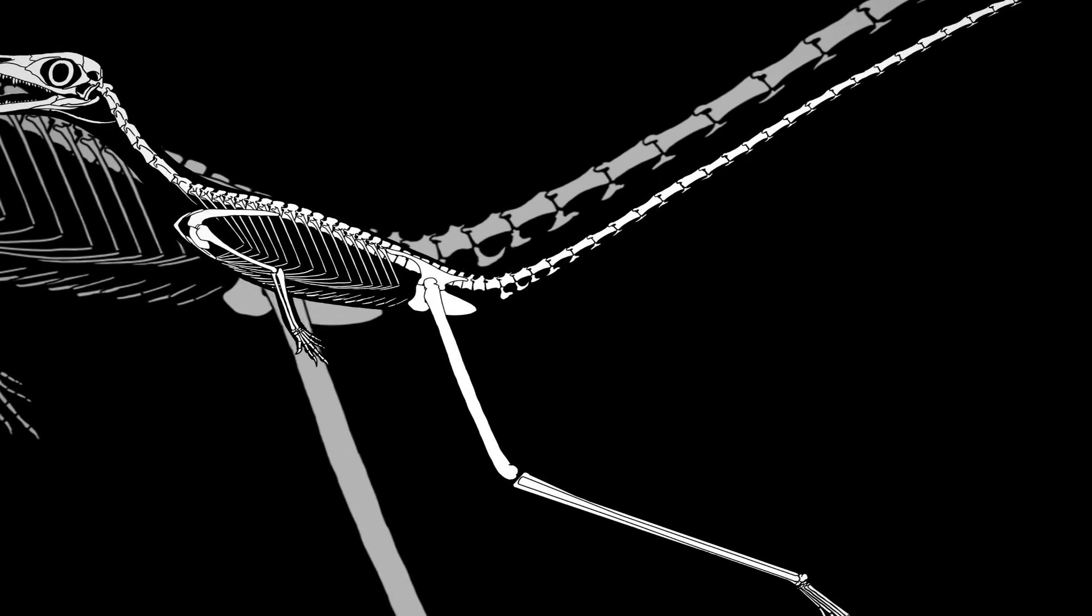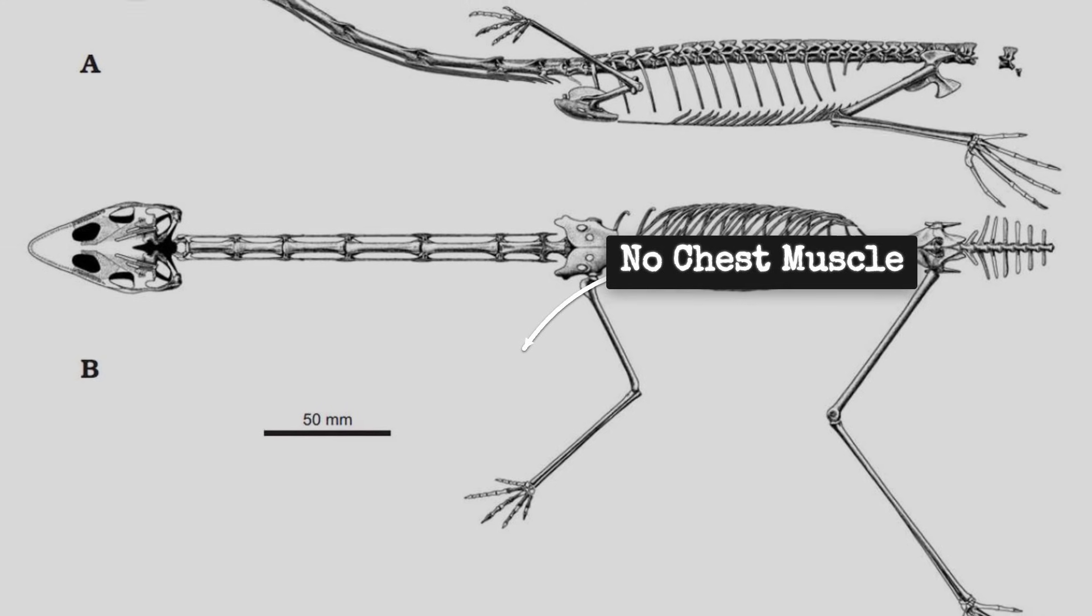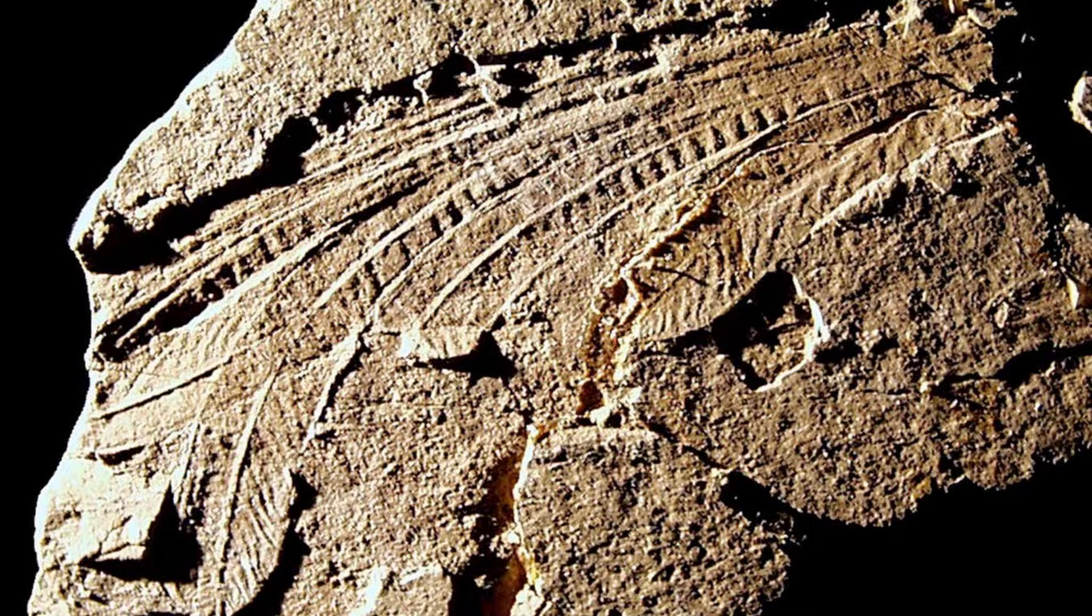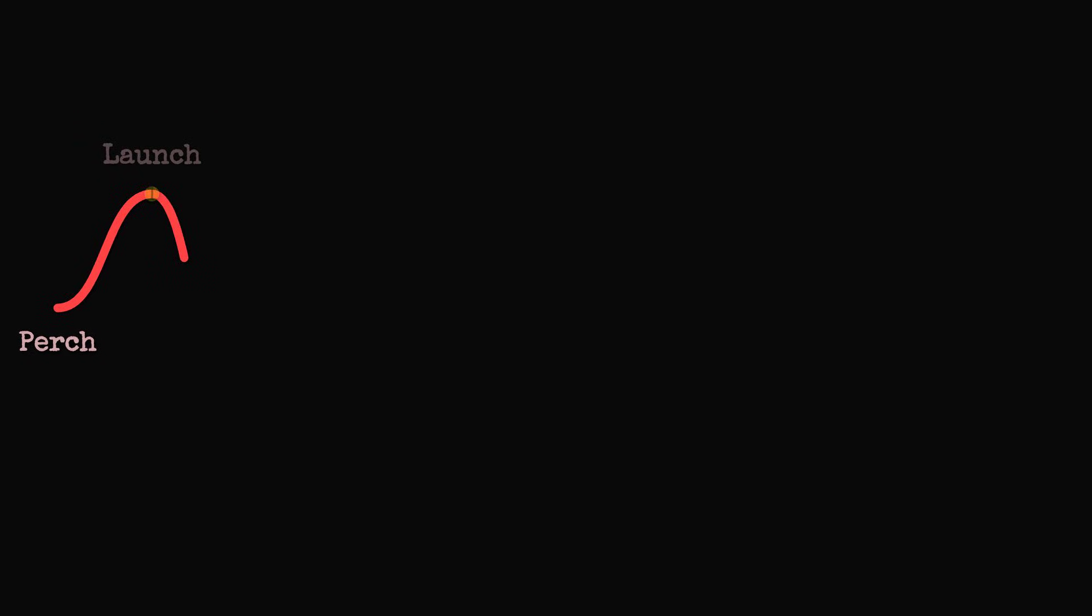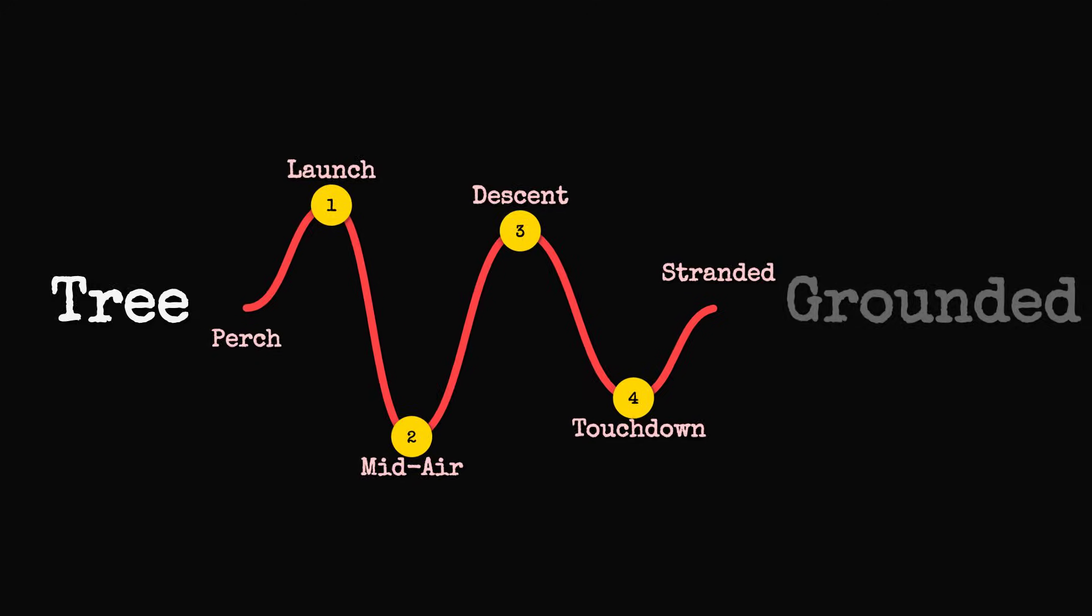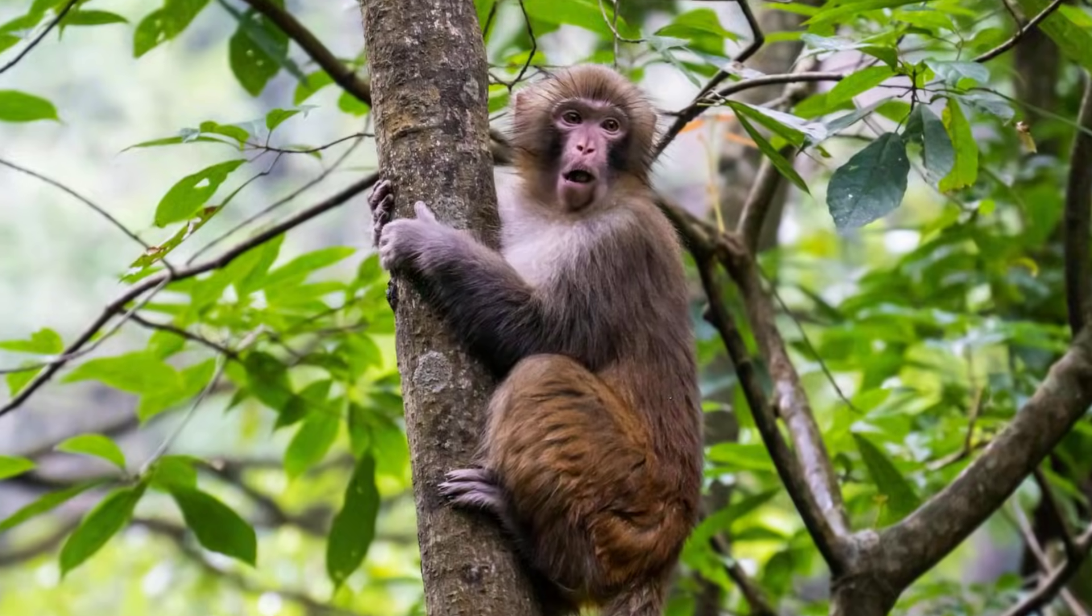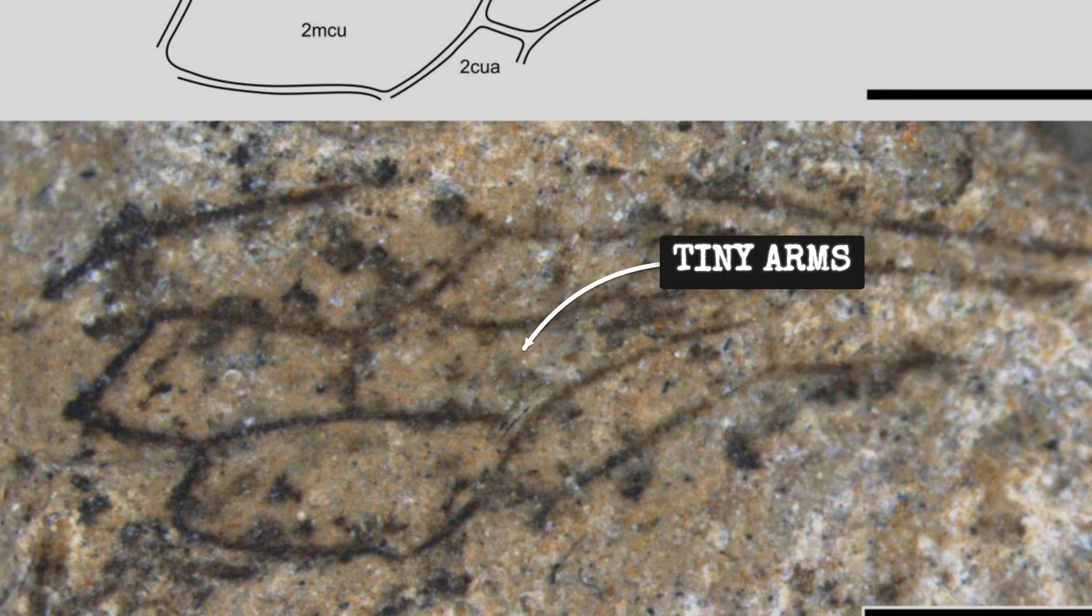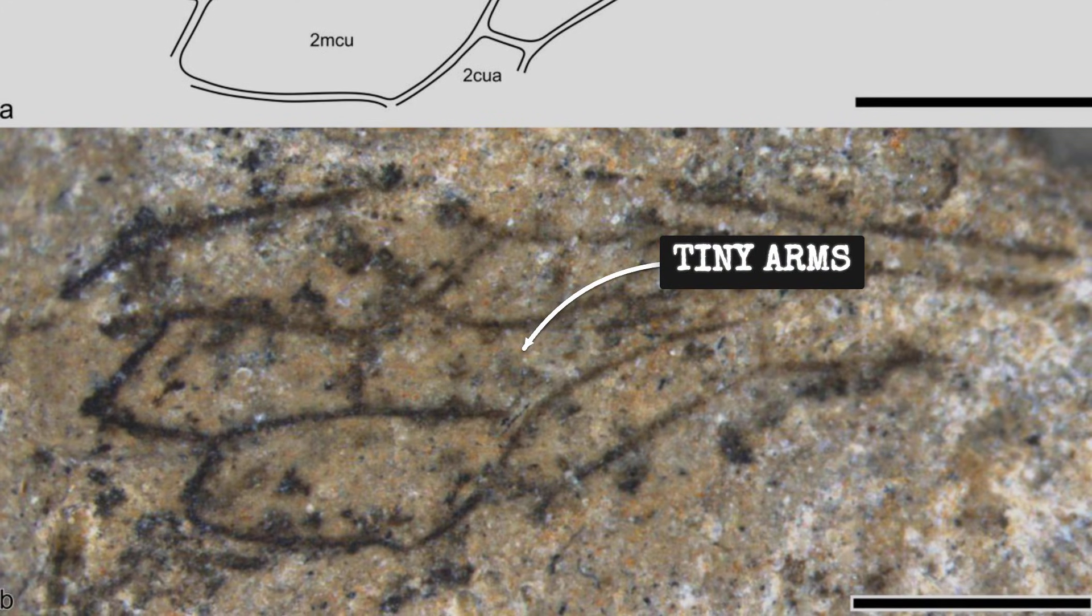Sharovipteryx put wings on the legs, no chest muscles for power, arms useless, pelvis not reinforced for flapping. It is a design that works once, for one glide, from one tree, then you are on the ground and you cannot take off again. To launch, you need to climb, and to climb, you need arms. The arms of Sharovipteryx were too small to grip anything.